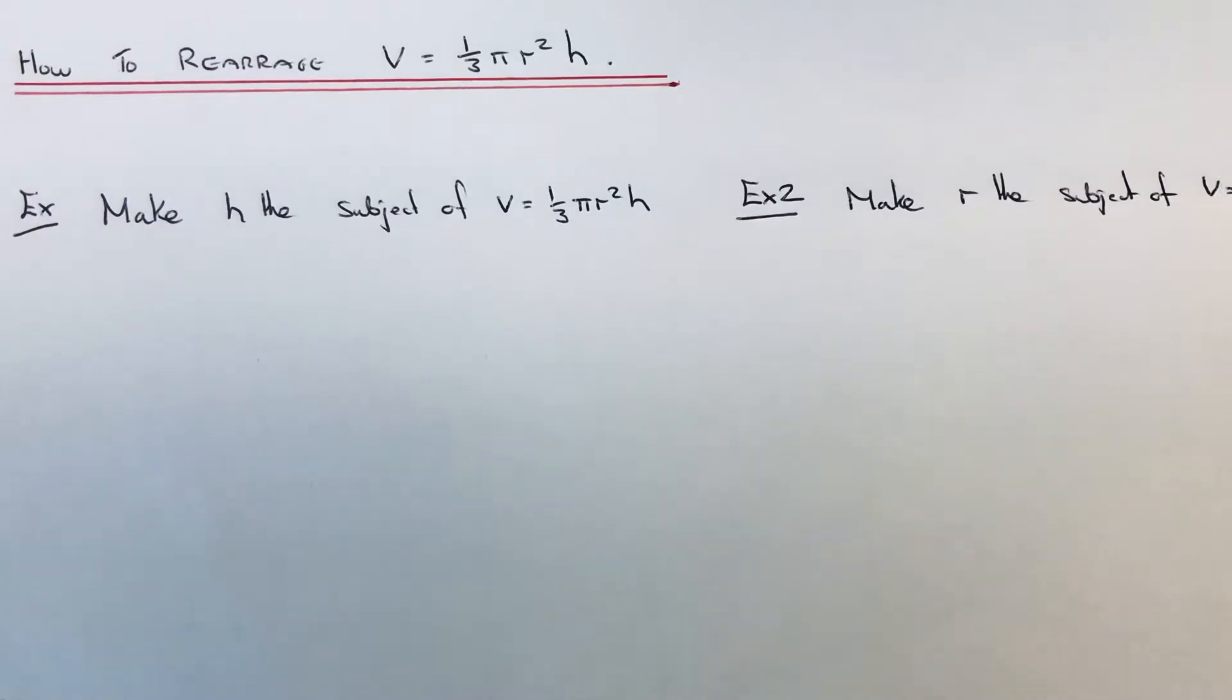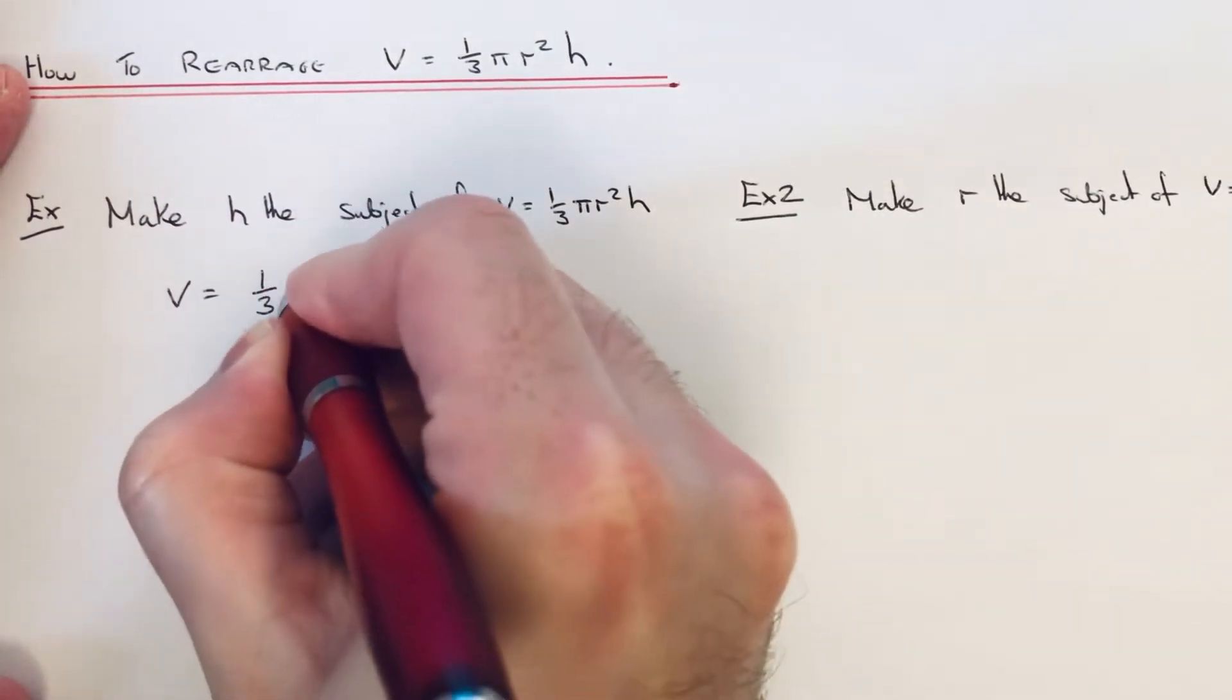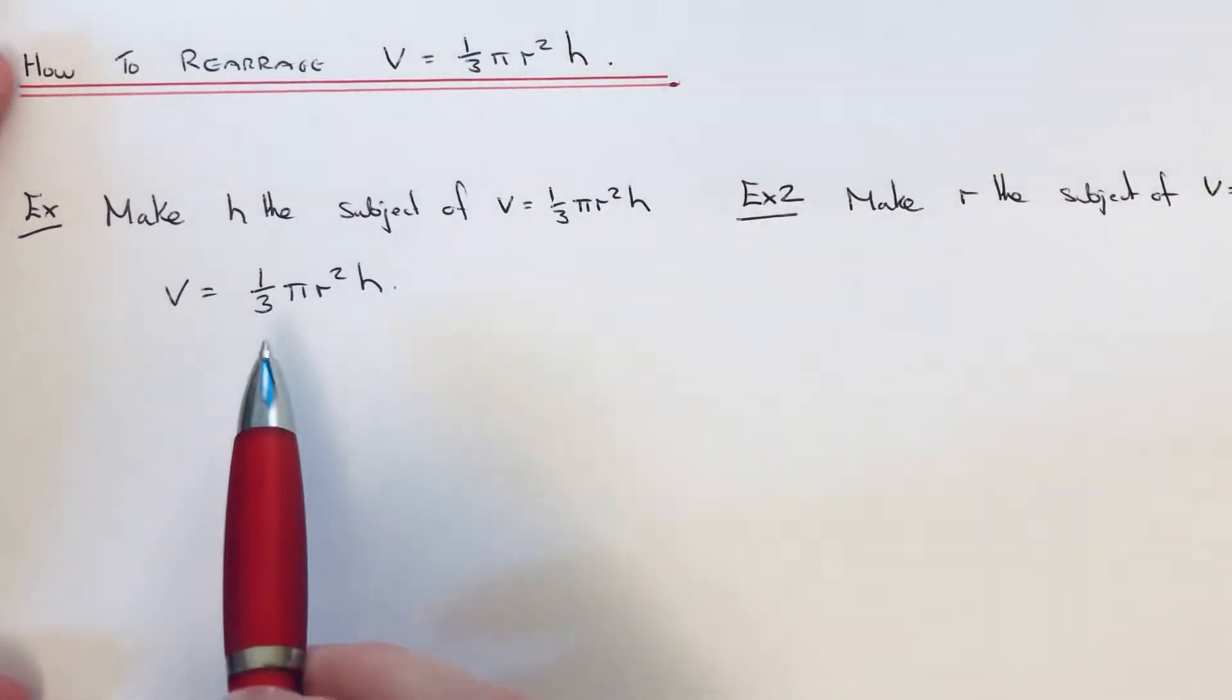Let's have a look at the examples. The first example: we're going to make h the subject of this formula. Let me just copy out V = 1/3 πr²h.